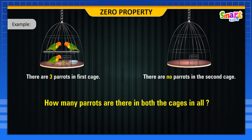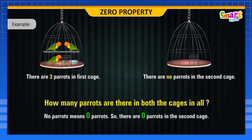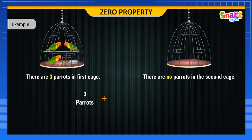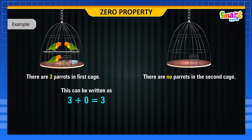Remember that no parrots means zero parrots. So there are zero parrots in the second cage. Three parrots plus zero parrots is equal to three parrots. This can be written as three plus zero is equal to three, which is called horizontal addition.